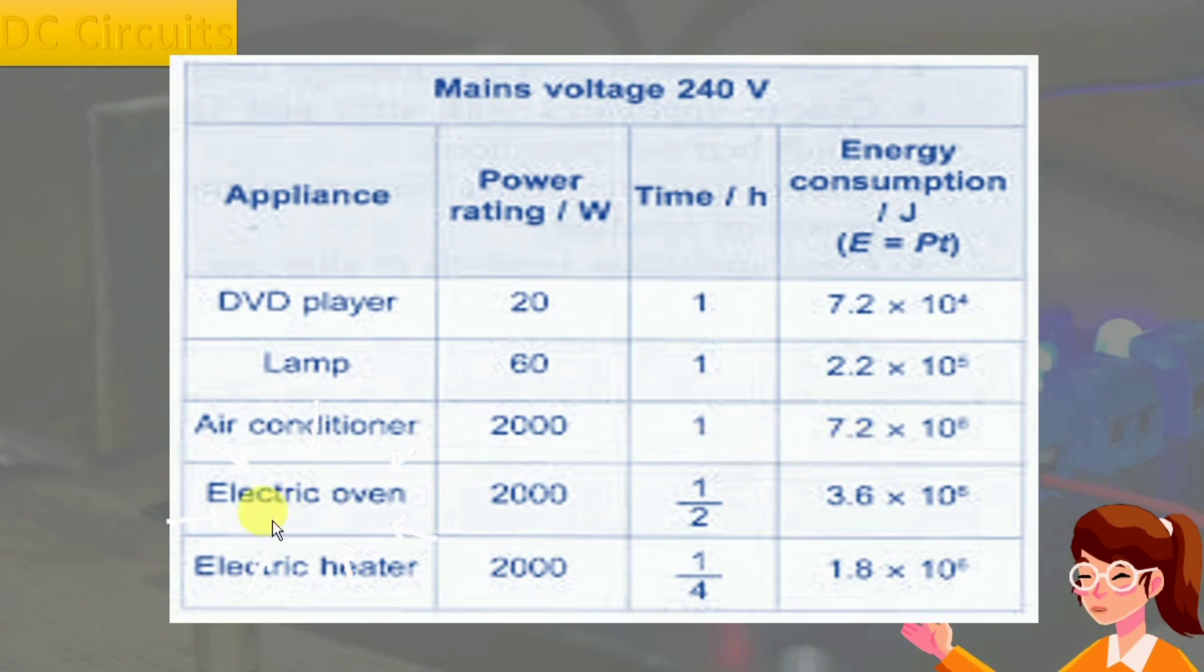Similarly, electric heater operates at 2000 watts for 15 minutes and consumes 1.8 times 10 to the power 6 joules of energy.